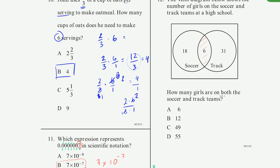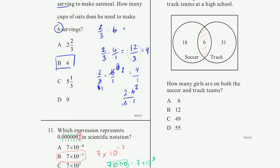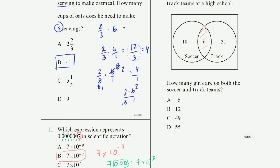How many girls are on both the soccer and the track team? Well, I kind of jumped the gun. They're telling us the answer right there. There are six girls. This overlap region, right?